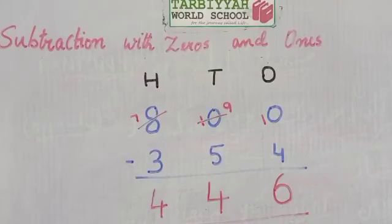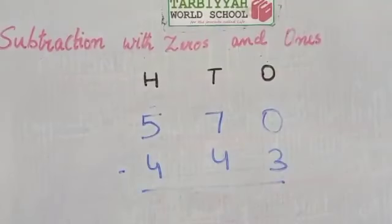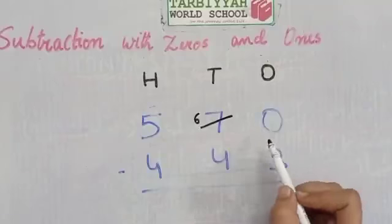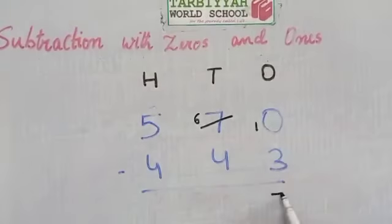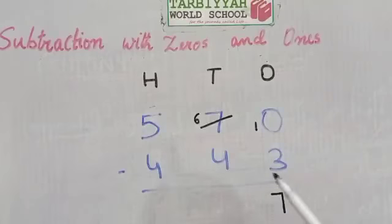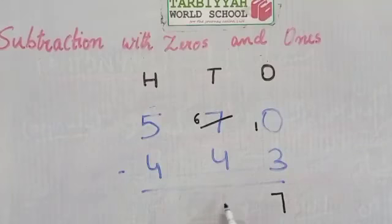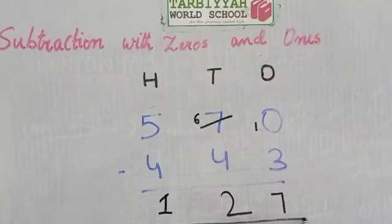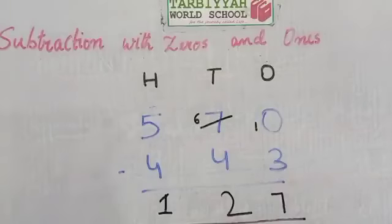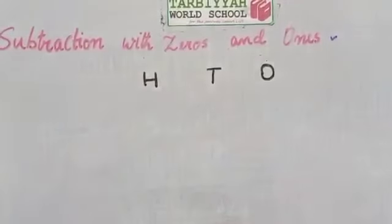Like this we subtract with zeros and ones. Now see another example. Zero minus 3 is not possible, so we take borrow. 7 tens will become 6 tens and 0 ones will become 10 ones. 10 minus 3 is 7, and 6 minus 4 is 2, and 5 minus 4 is 1. So the answer is 127.